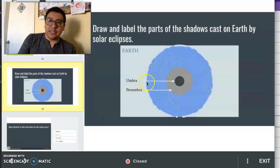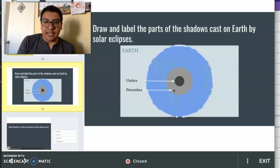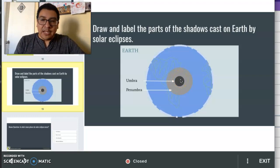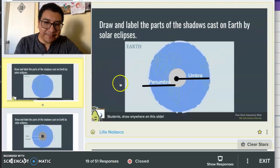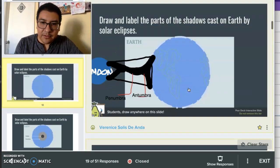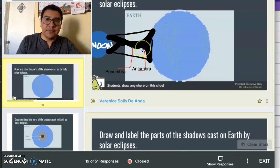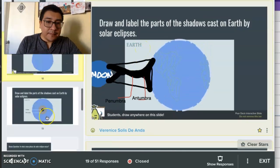So yes, the shadows that are cast on Earth, remember they're cast mainly in two parts: the umbra and the penumbra, with the antumbra during that annular eclipse. When we see the shadow cast on Earth, we don't really see much of a difference unless we were seeing from a side view, like one of the students drew here.